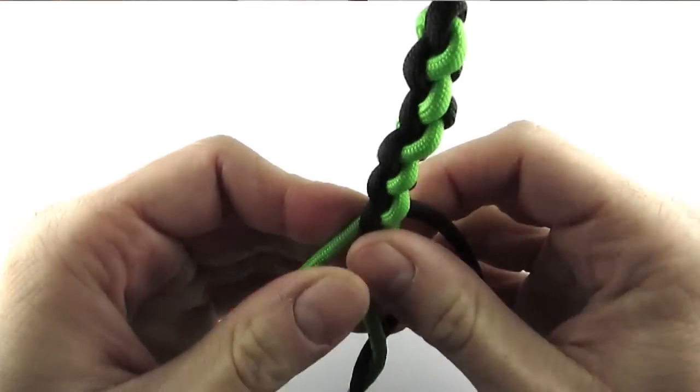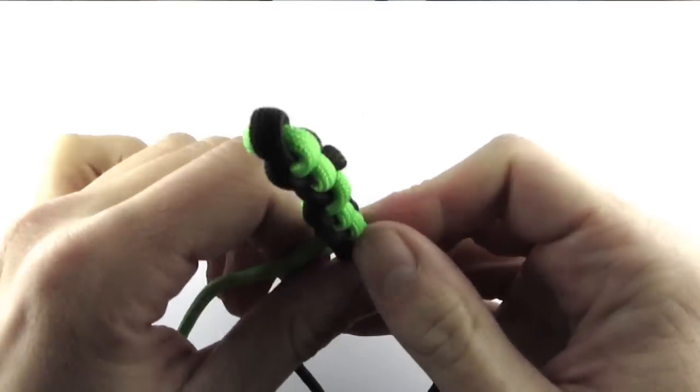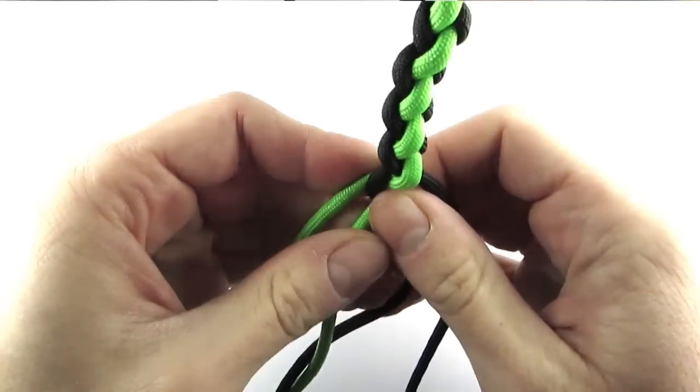Which basically means that each cord gets its chance to be braided. This gives the braid the traditional diamond look.